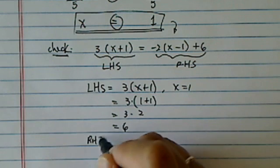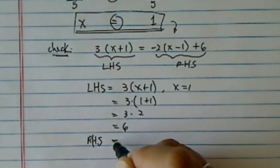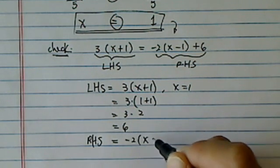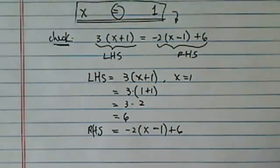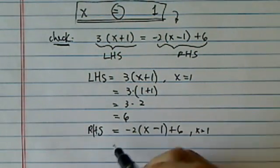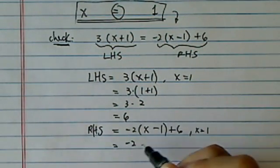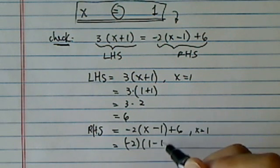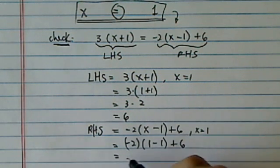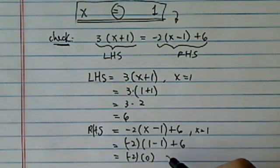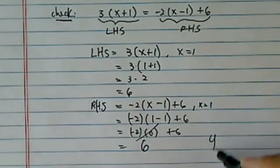3 times 1 plus 1, 3 times 2, so left-hand is equal to 6. Let's try the right-hand side. If we did everything right, we should have exactly the same answer on both sides. Okay, once again, X equals 1. So on the right-hand side, I have minus 2 times 1 minus 1 plus 6, minus 2 times 0. All right, that's a 0. It's equal to 0 plus 6, which is 6.